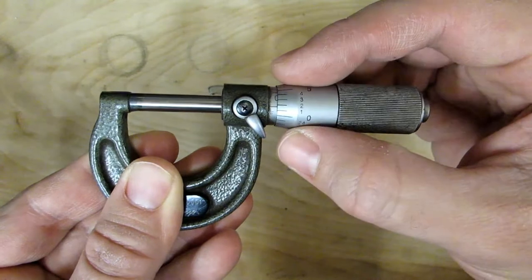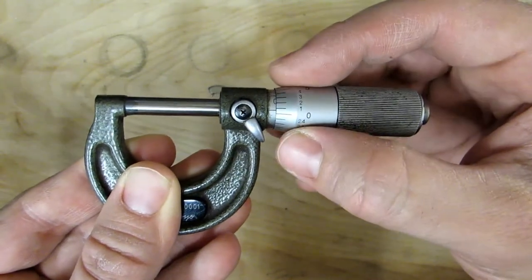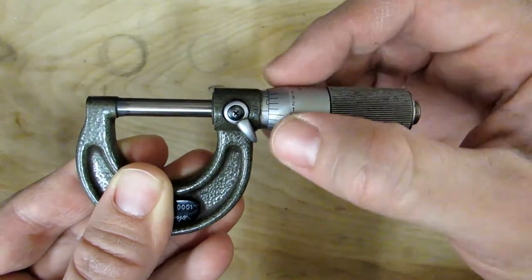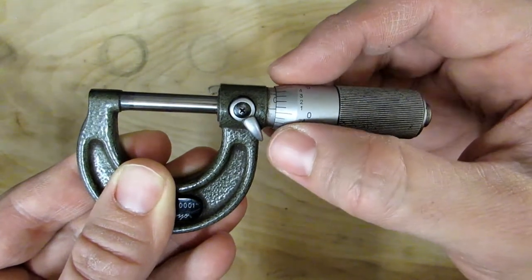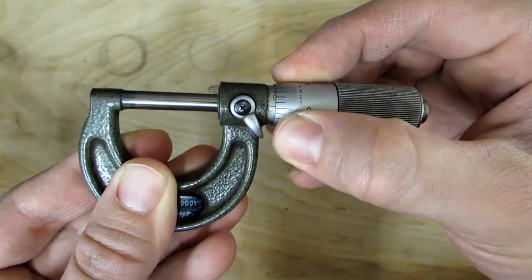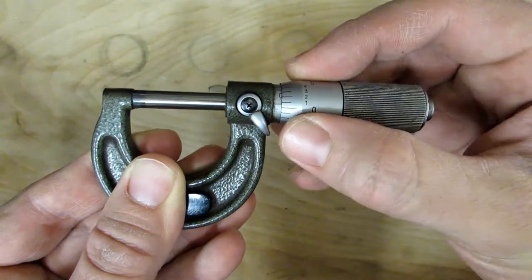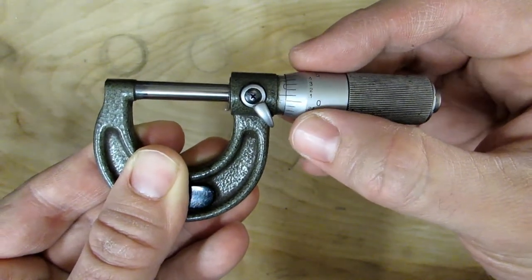If you try to use the stationary portion of the thimble here and just kind of let your fingers slide, you get a lot of variance. You can actually squeeze this down and make it read zero if you really wanted to. That doesn't mean that the measurement is actually zero.